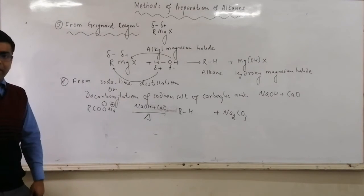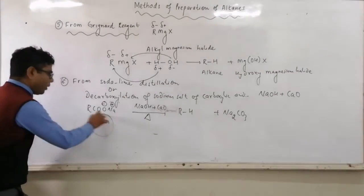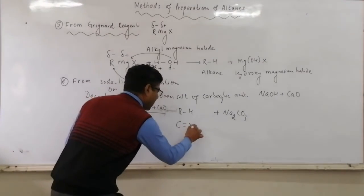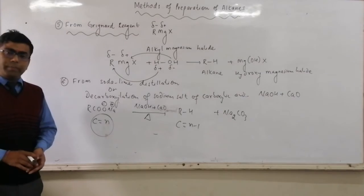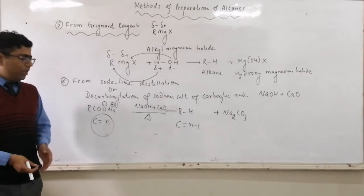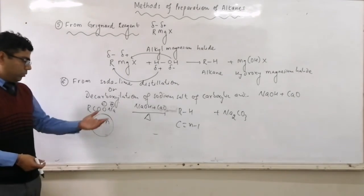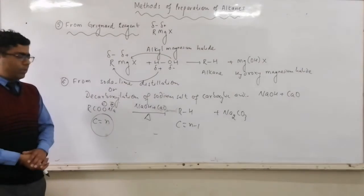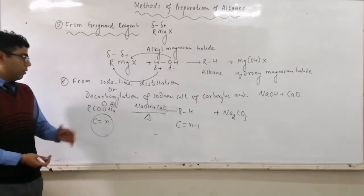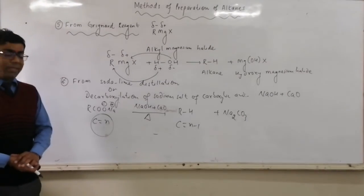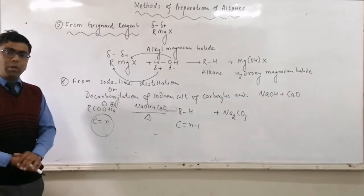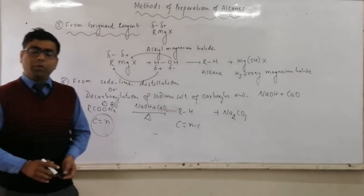So sodium salt of carboxylate acid gets converted to alkane. Important point: if the sodium salt contains N carbon atoms, the alkane will have one carbon atom less than the parent molecule, because one carbon atom is removed in the form of CO₂. That is why it is called decarboxylation — decarboxylation of sodium salt of carboxylic acid. As it takes place in the presence of soda lime at high temperature, it is also called soda lime decarboxylation. It is a type of step-down reaction because the product molecule contains one carbon atom less than the parent molecule.